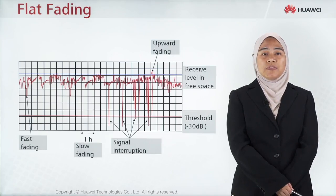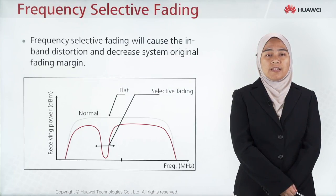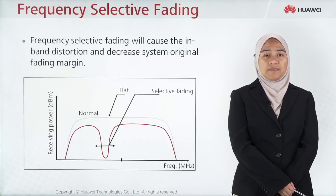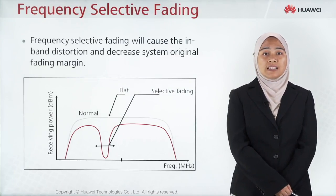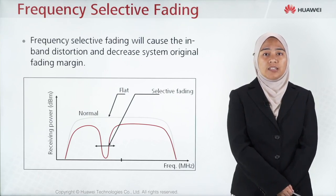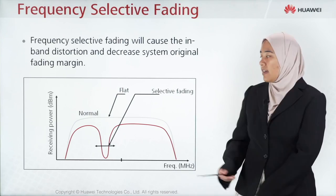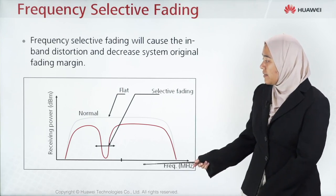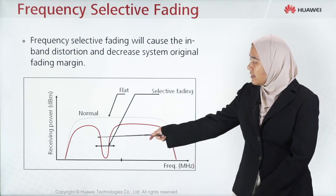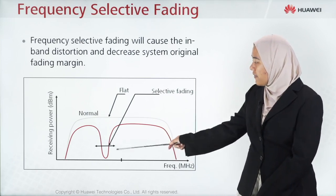Fading can also be classified as fast fading and slow fading, which can last from several minutes to several hours. Frequency selective fading will cause in-band distortion and decrease the system's original fading margin. Referring to this figure, you can see the normal and the selective fading. Selective fading occurs on a certain frequency.